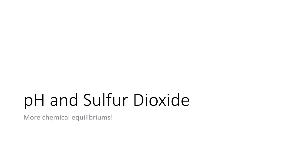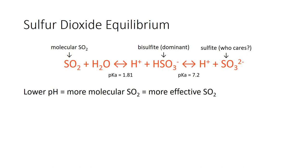Moving on to pH and sulfur dioxide. At wine pH, the majority of SO₂ is in the bisulfite form. As pH decreases, we get more molecular SO₂, which is the pure SO₂ form and the more effective antimicrobial form. At really high pH we have sulfite, but that's not relevant since the pKa for bisulfite/sulfite equilibrium is 7.2, which is out of our range. The key idea: lower pH means more molecular SO₂, which is the more effective form.